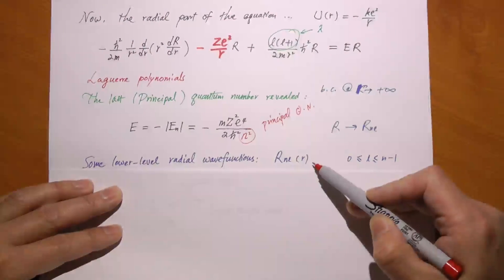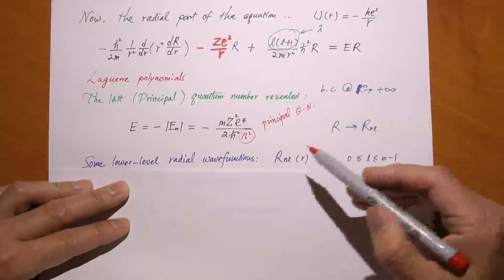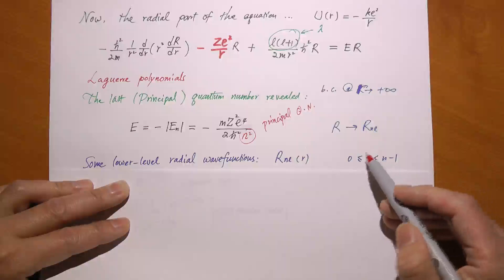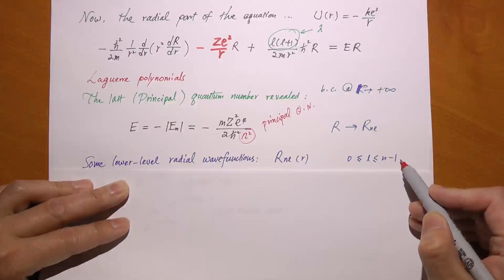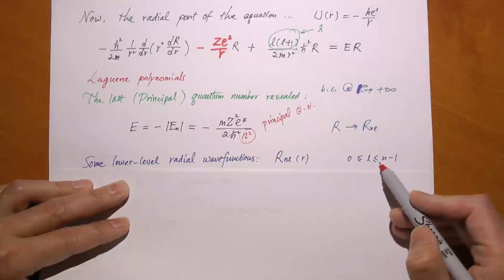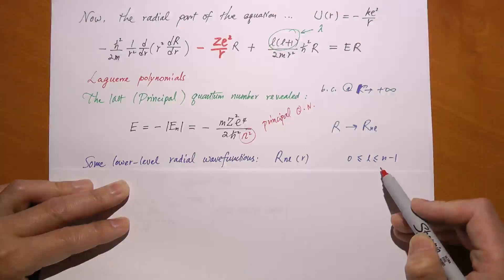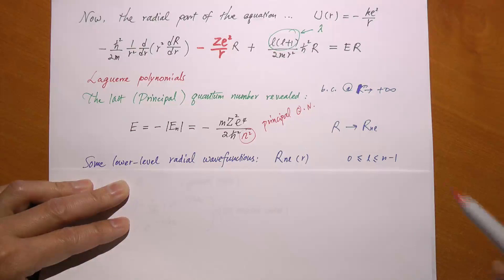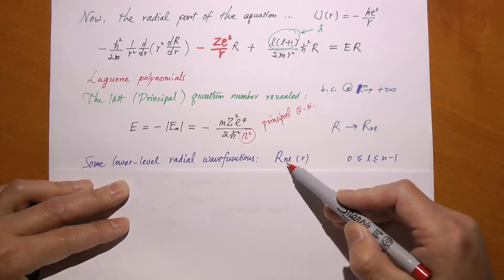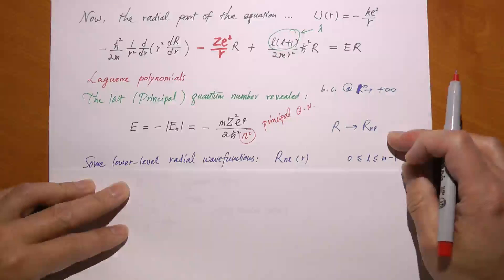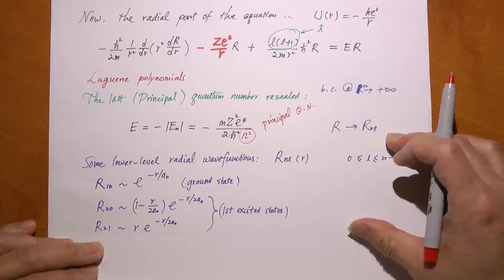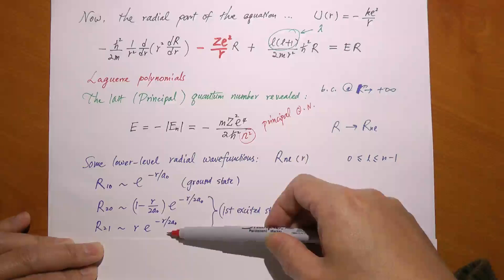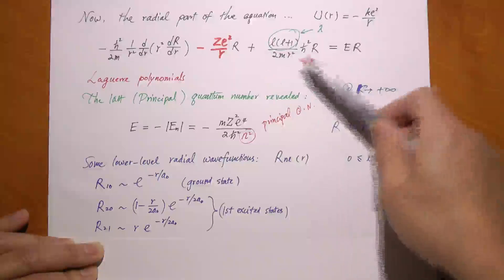The radial part of the wave function has two quantum numbers: l, already present, and n. So R is now a function of two quantum numbers n and l. It turns out n cannot be too small — it cannot be smaller than l plus one. In fact l starts from zero and can go as much as n minus one. For n equal to one, the ground state, l can only be zero. For n equal to two, l can have values zero and one. The most important expressions are those with small n and small l, because hydrogen is usually found near the ground state.